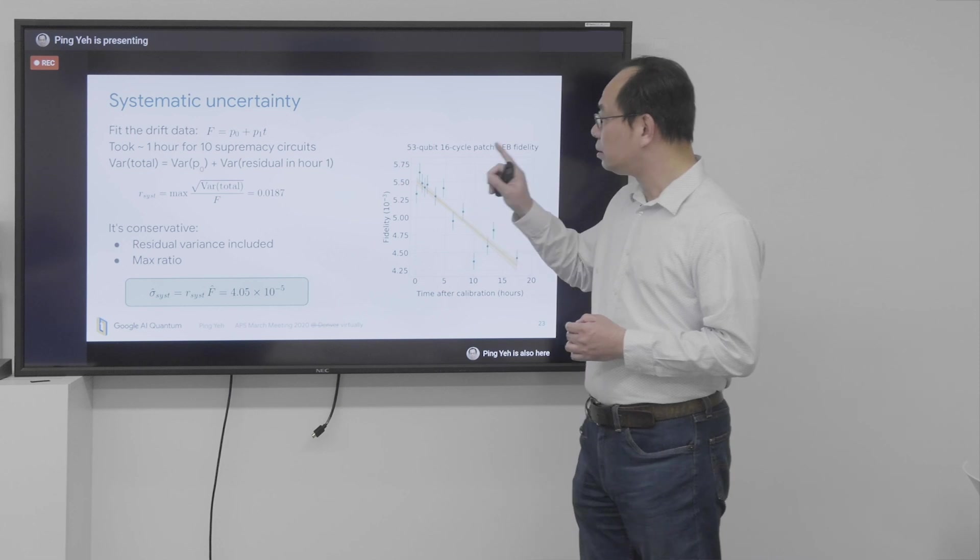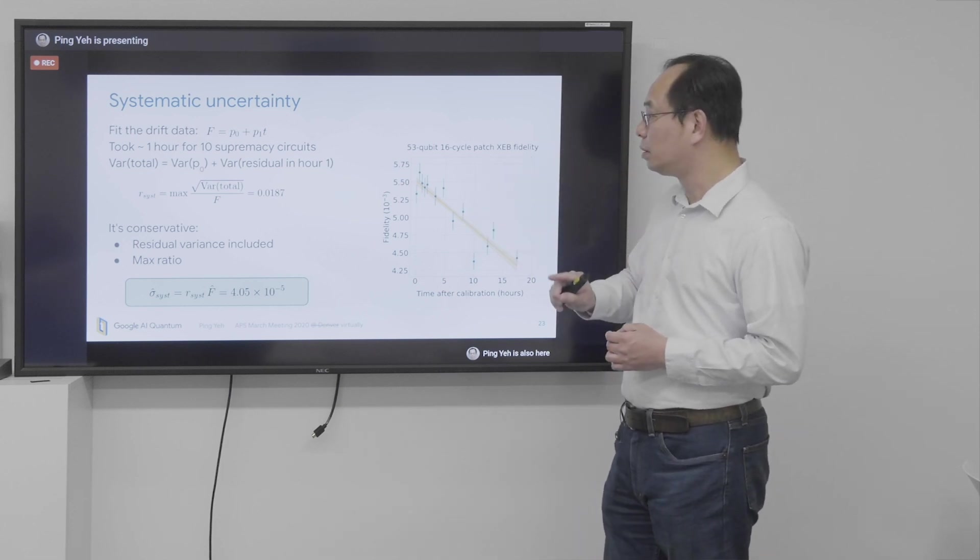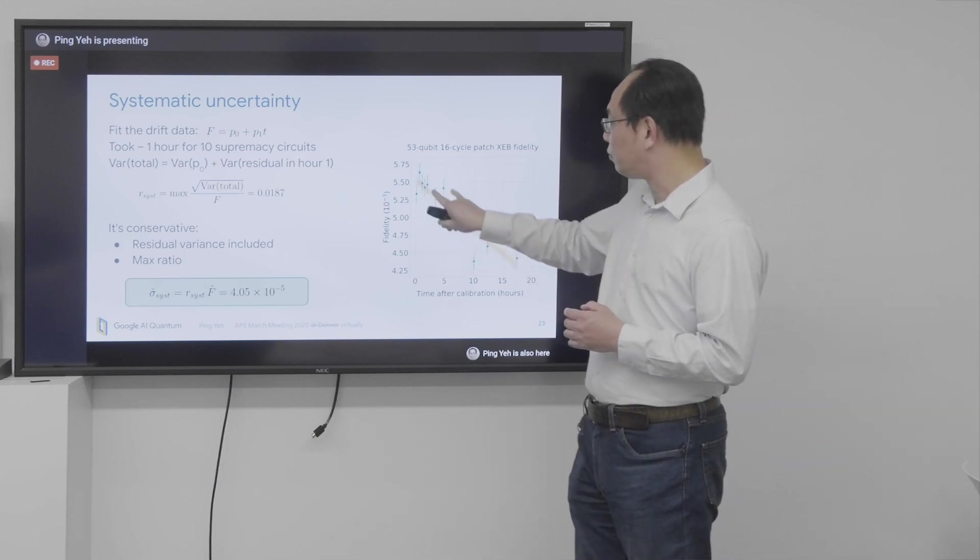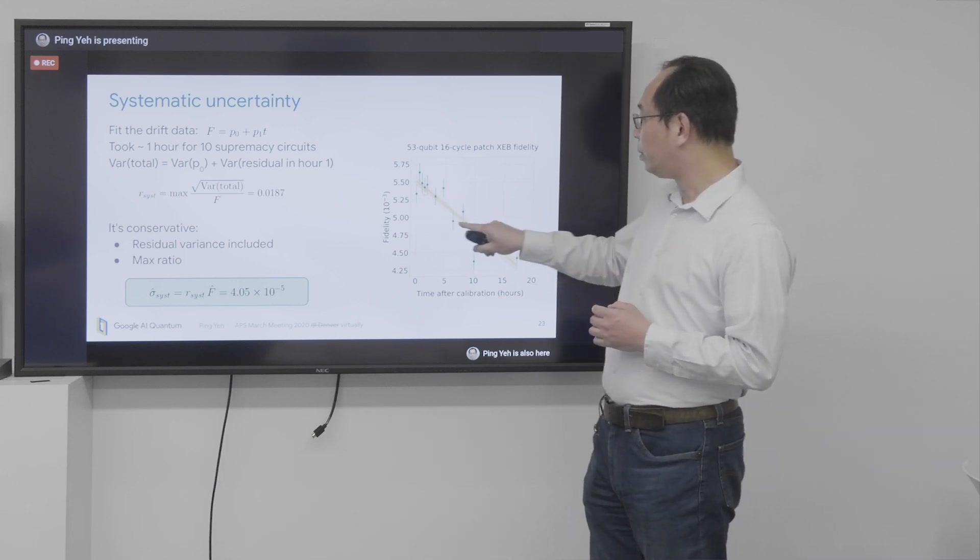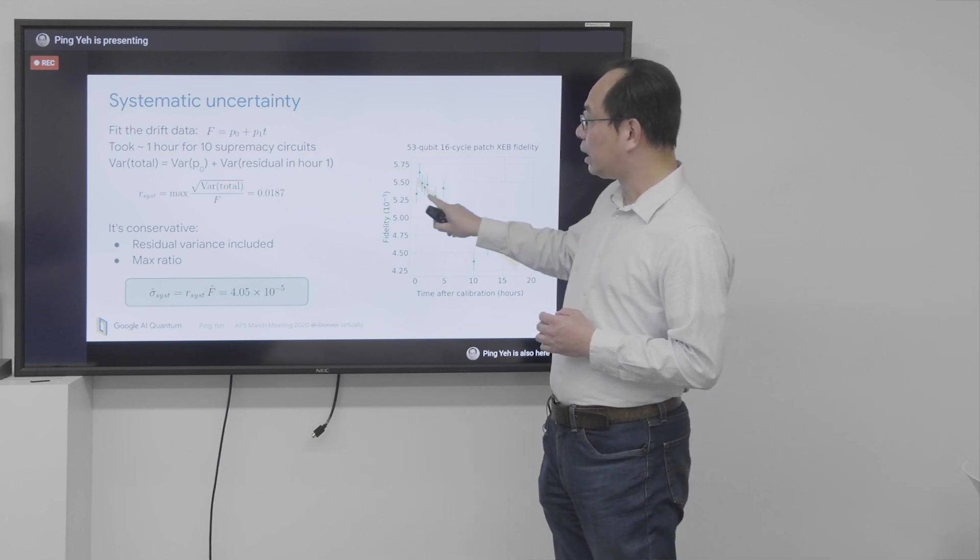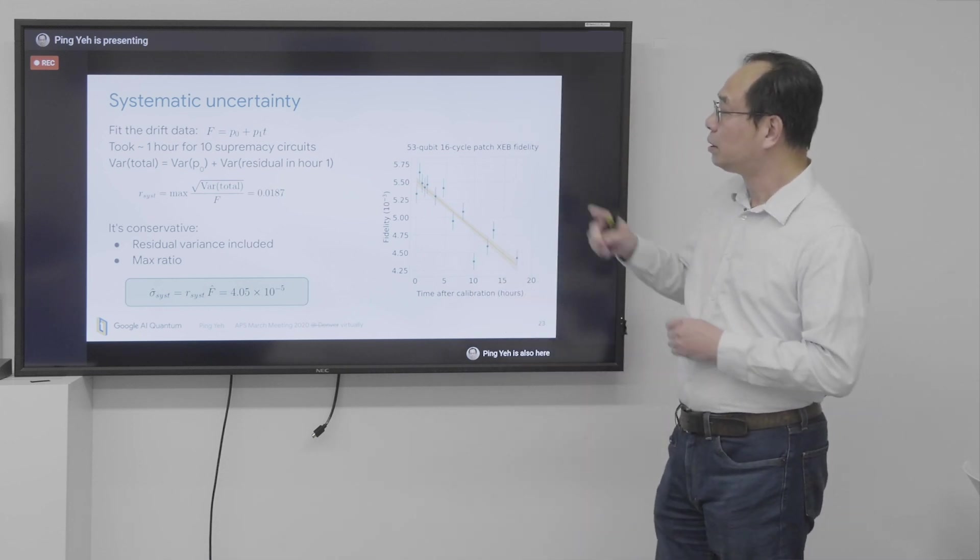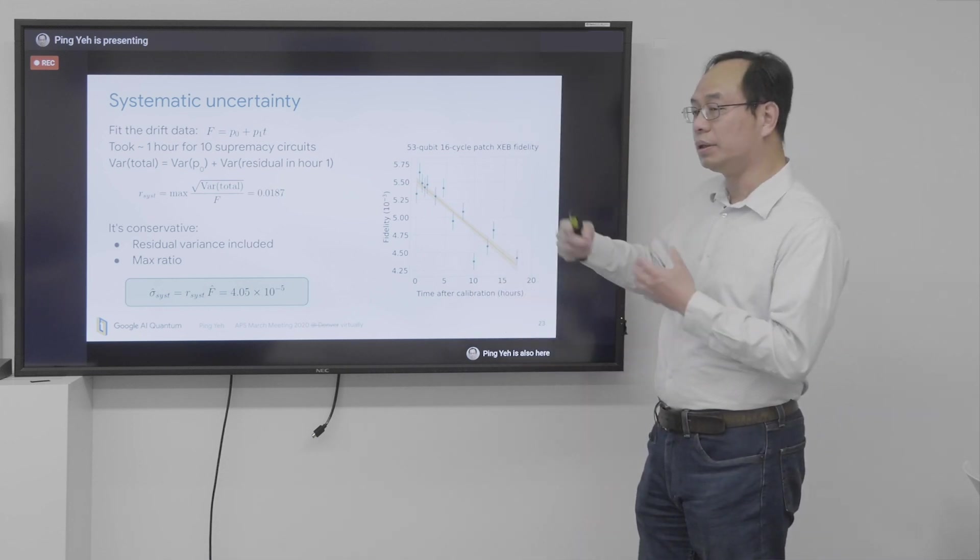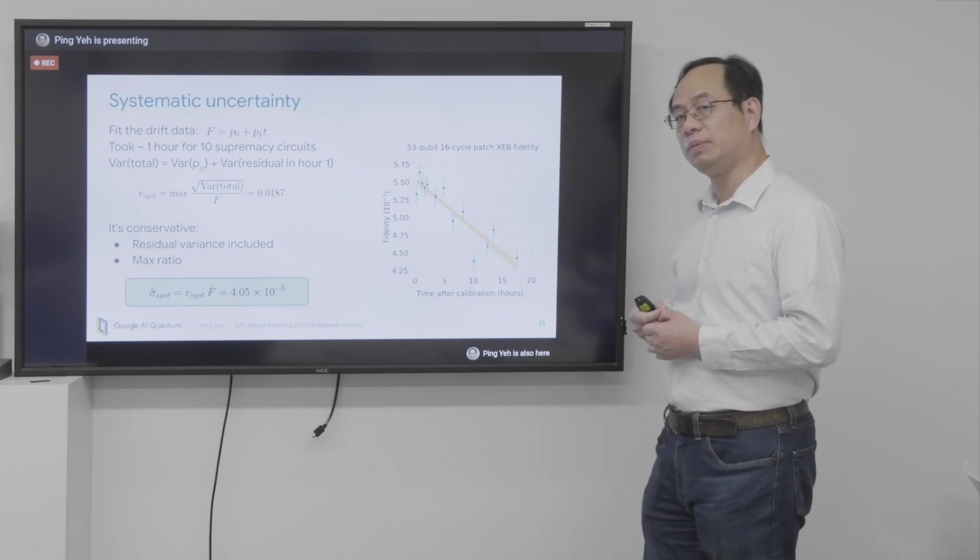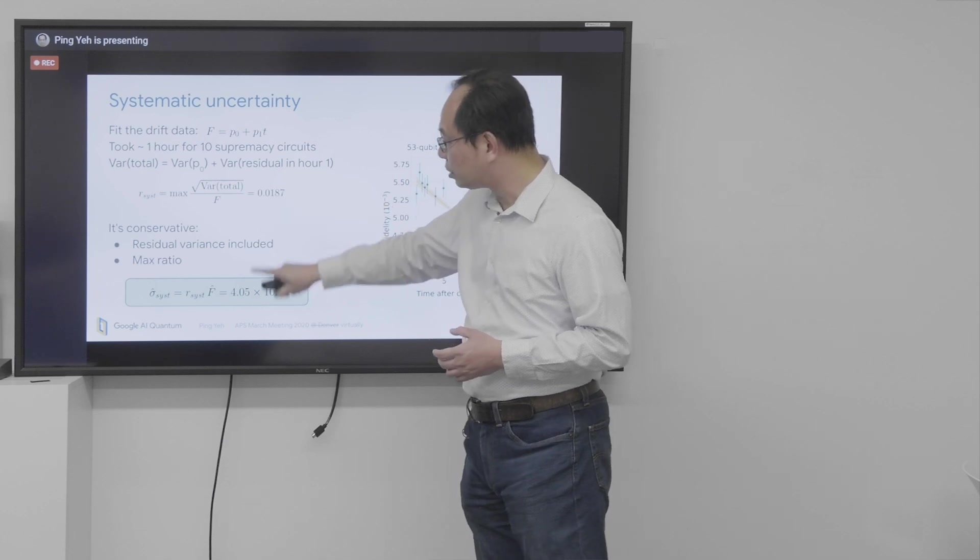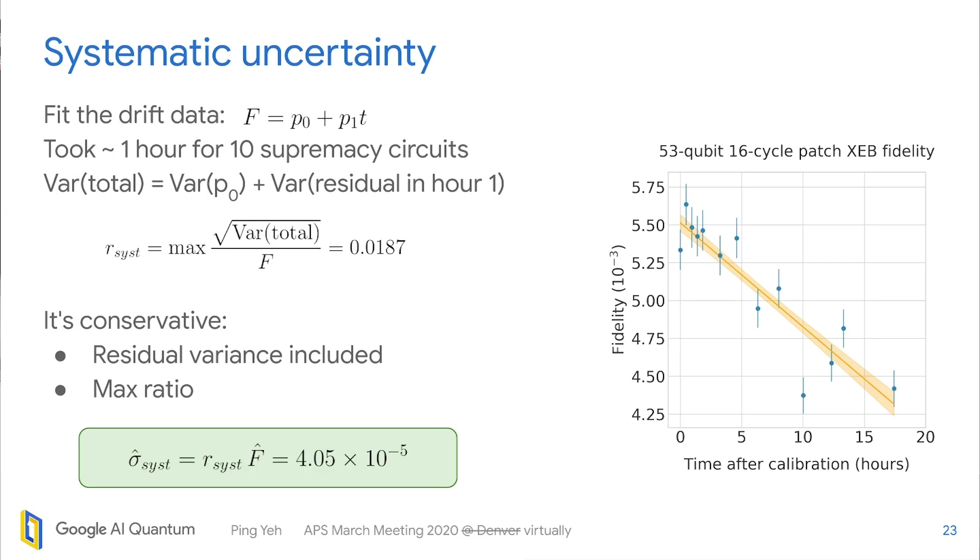And the supremacy experiment is, the data of supremacy experiment is taken in the first hour. So we use the variation of the residual in the first hour plus the variation of the intersection to intersect as a variance of the fidelity itself. And we treat that as a systematic uncertainty. And we take that ratio and multiply the ratio to the estimated fidelity to be the final estimate of the systematic uncertainty. So we get that number.